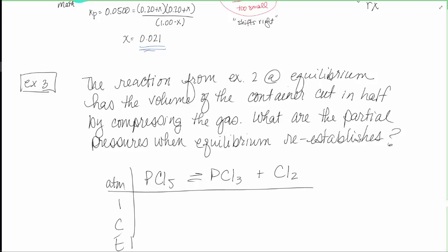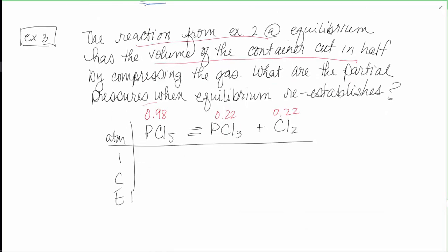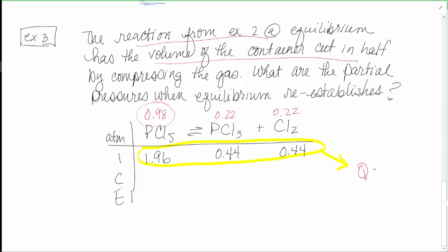Same equation and equilibrium expression, so I'll go straight to the ICE table. Where we left off in example two: PCl5 = 0.98, PCl3 = 0.22, Cl2 = 0.22. Cutting the container volume in half means pressure doubles — all the gas molecules are now in half the space. So initial pressures become: PCl5 = 1.96, PCl3 = 0.44, Cl2 = 0.44. To find the direction of shift, we calculate Q by plugging those values into the equilibrium expression: (0.44)(0.44) / (1.96) = 0.10.